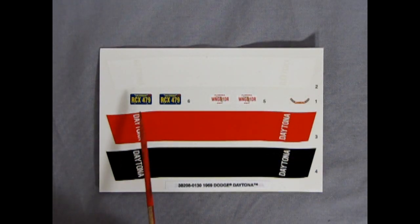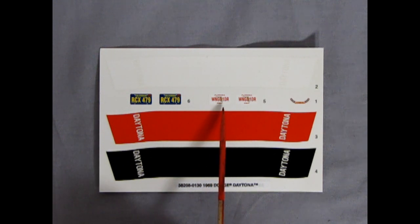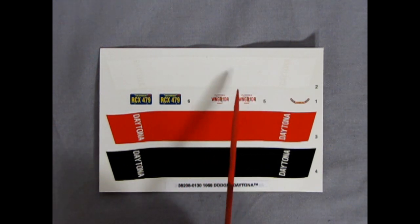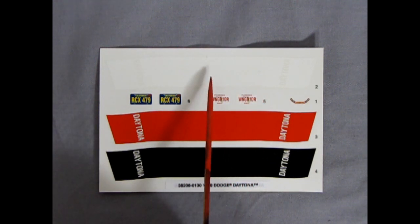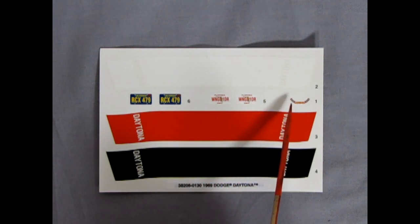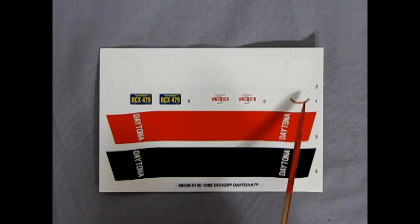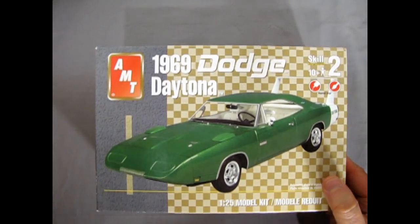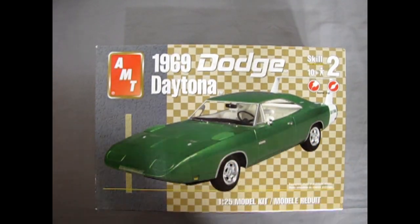And last but not least we have our decal sheet with a California license plate as well as one for Florida. So this is coast to coast, coming to you live coast to coast. We have a white Daytona decal, red and black, so you do get choices for these for different colors. And there is a nice air cleaner decal on here as well. And that concludes our look at the AMT 1969 Dodge Daytona.